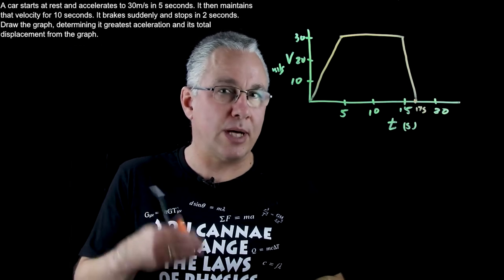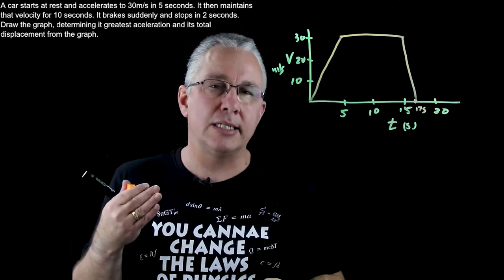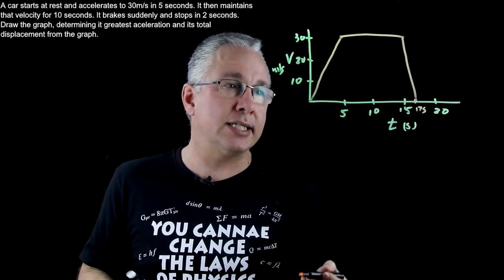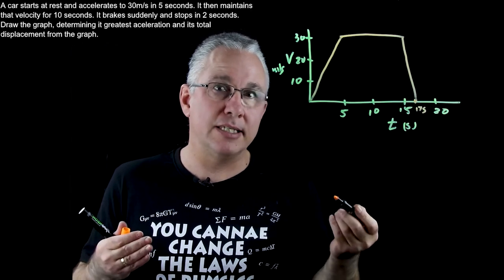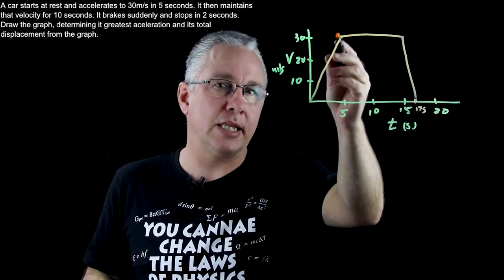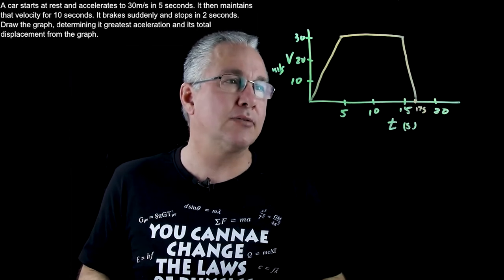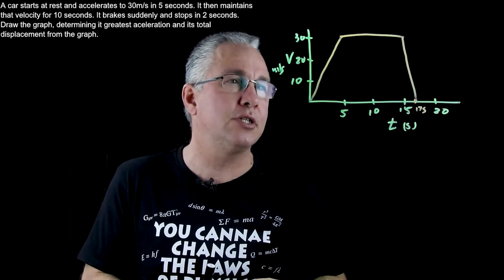And we're asked two things. We're asked first of all what is the greatest acceleration and secondly what is the total displacement. Well the greatest acceleration is where the graph is the steepest so we have acceleration here, we have negative acceleration here but the size or the steepness of this line is greater so this is the section we're interested in.